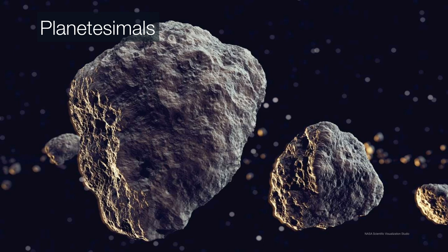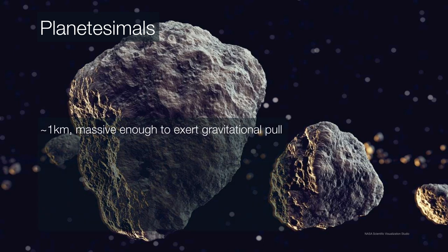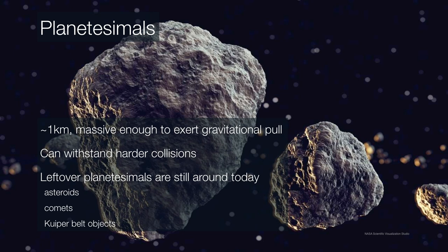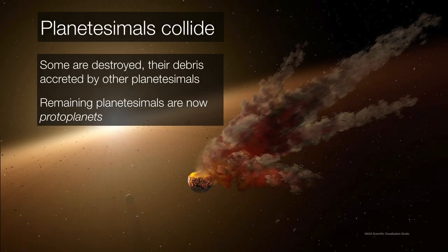At planetesimal sizes, at about one kilometer, they're massive enough to exert a gravitational pull on one another. This means that they can withstand harder collisions. And in fact, we see leftover planetesimals around the solar system today. They are modern-day asteroids and comets and Kuiper Belt objects. And these planetesimals collide in a kind of proto-solar system demolition derby. Most of these are destroyed and are later accreted onto other planetesimals. And the most massive of these planetesimals survive and are now proto-planets.